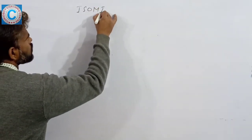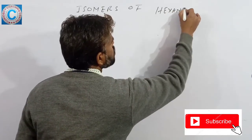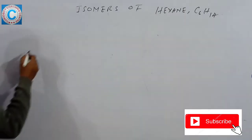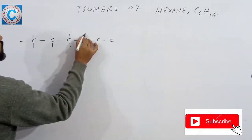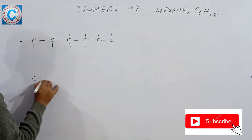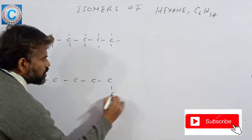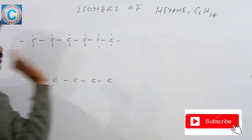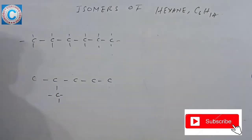Now let's see the isomers of hexane, that is C6H14. First, 6 carbon atoms in a straight chain — this is N-hexane. Next, 5-carbon chain with a methyl group attached — this is a new structure.